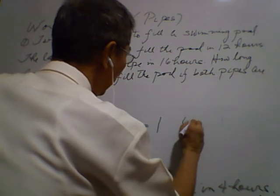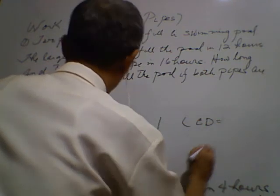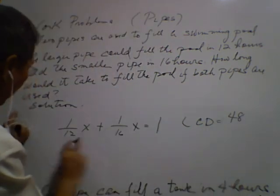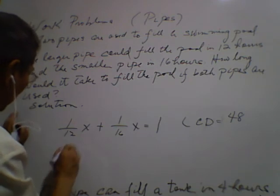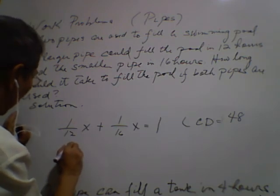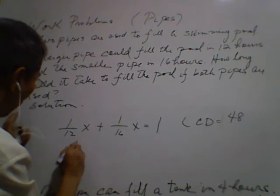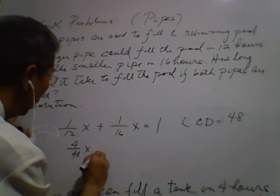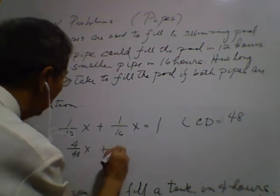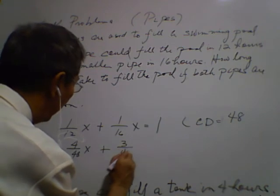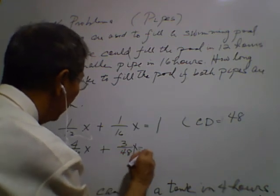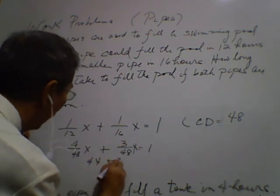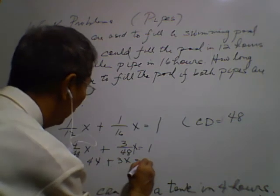LCD of the two pipes, that is 48. So 1 over 12, 48 divided by 12 is 4 times 1 is 4 over 48 x, plus 3 over 48 x is equal to 1. So 4x plus 3x is equal to 48.